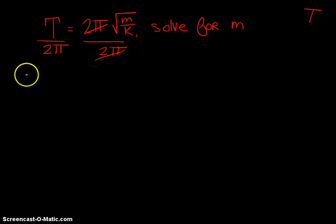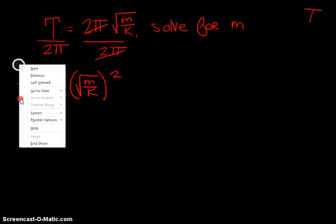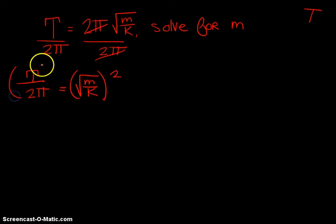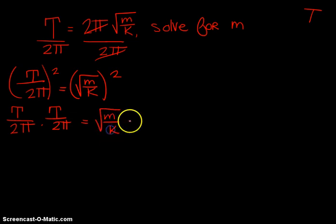Now I end up with period over 2π equals the square root of m over k. I don't want to have m under the square root sign. The only way to deal with that is to square that entire component. If I square that side, I'm going to have to square this side as well. If you had period over 2π multiplied by period over 2π, and the square root of m over k times the square root of m over k, what do you really end up having?